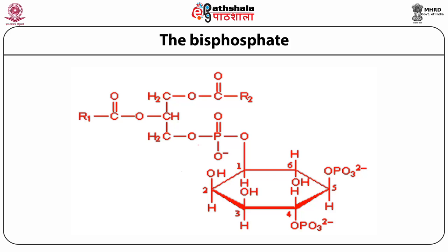IP3 has a short life of only a few seconds due to phosphatases stripping off all the phosphate and producing inositol. Alternatively, IP3 can also be further phosphorylated to 1,3,4,5-tetrakisphosphate which is called IP4. IP4 then generates another isomer of the original IP3. This isomer generated by a phosphatase is inositol-1,3,4-triphosphate, which is also converted to inositol by a phosphatase. This phosphatase is strongly inhibited by lithium ion at a millimolar concentration. It is believed that the therapeutic benefit of lithium ion in the treatment of manic depression disorders is due to its inhibition of this phosphatase.